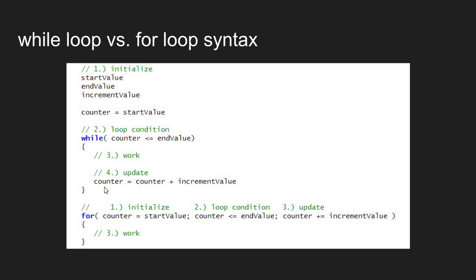There is one main difference between the while-loop and the for-loop, and this can be an important difference. In our while-loop, the update statement takes place in the loop body, whereas in a for-loop, the update takes place after we execute the code block for the loop. So if we were to break out of a while-loop early, there's a chance we would miss updating our conditional variable. Whereas if we break out of a for-loop early, we would still get a guaranteed update. That's the main difference.